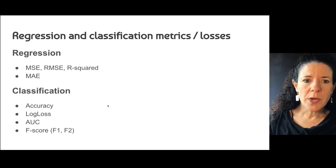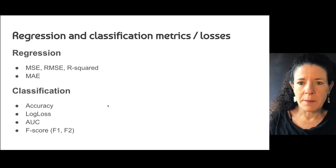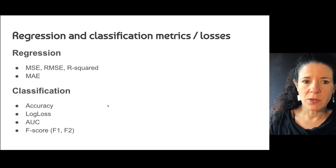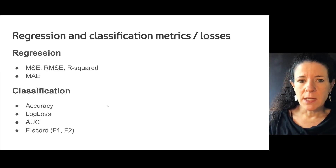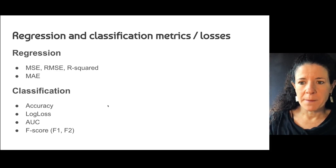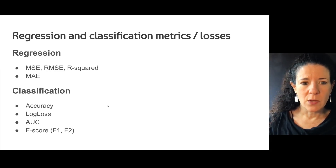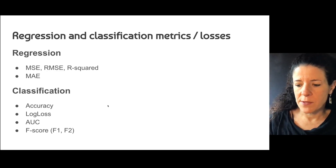We're going to talk about the following losses and metrics for regression and classification. For regression: MSE, RMSE, R-squared, and MAE. For classification: accuracy, log loss, AUC, and F-score.